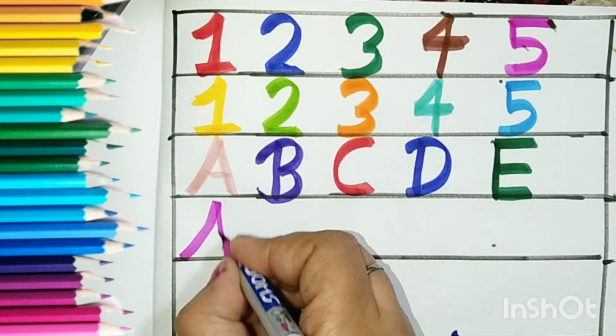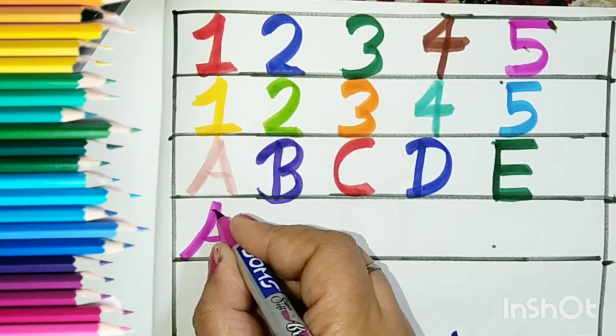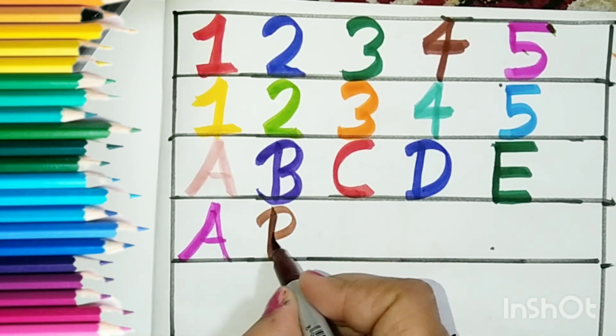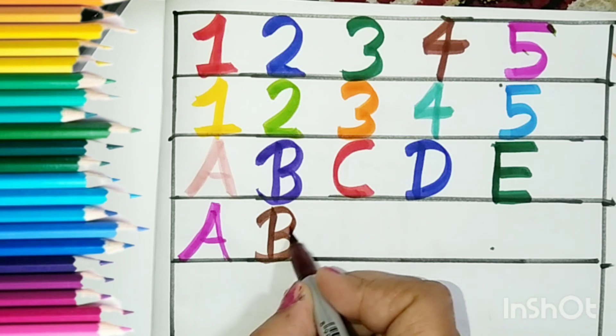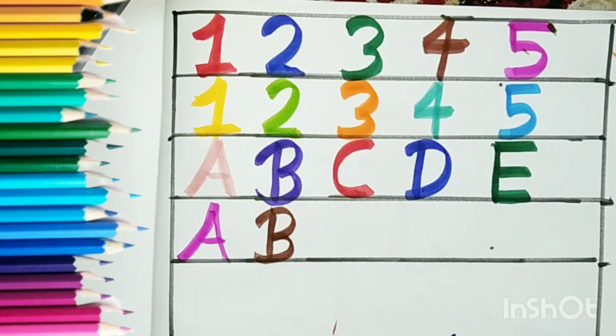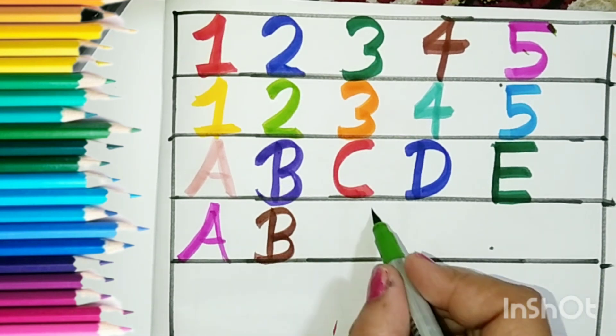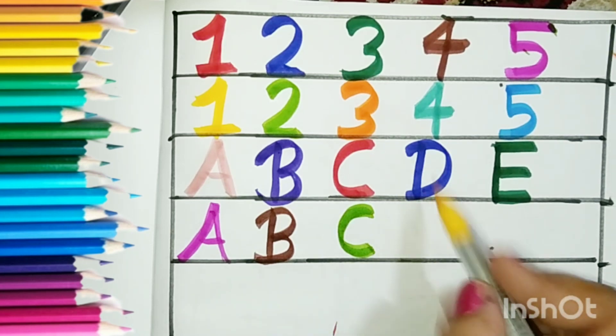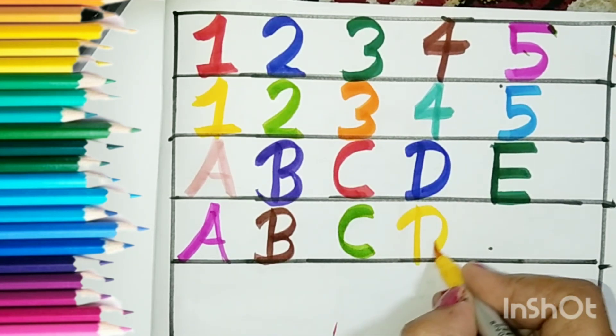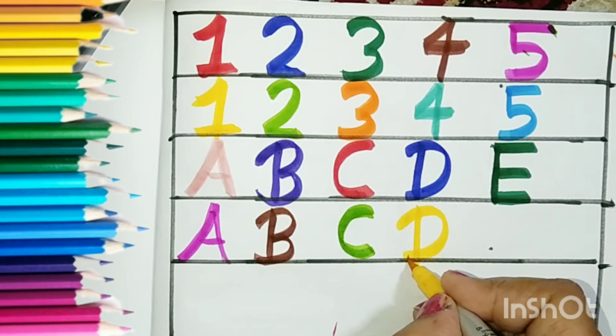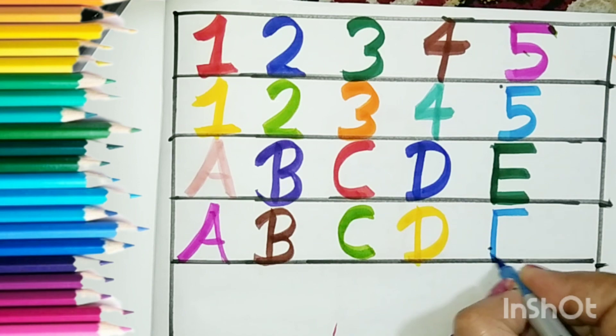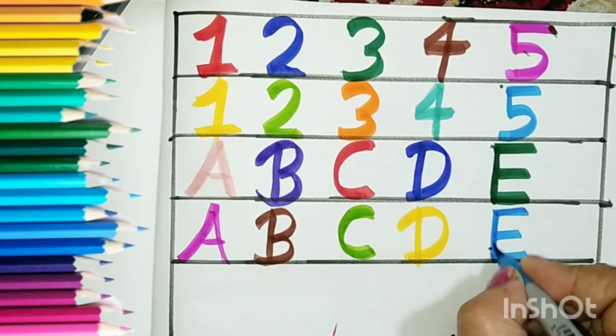A for apple. A for apple. B for ball. B for ball. C for cat. C for cat. D for dog. D for dog. E for elephant. E for elephant.